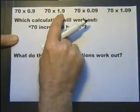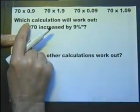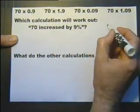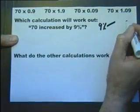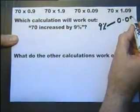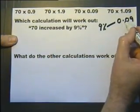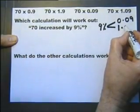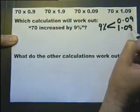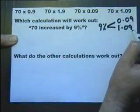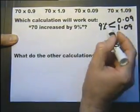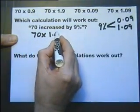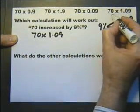We have four calculations. Which calculation will work out 70 increased by 9%? Let's look at 9%. 9% as a decimal is 0.09. However, if we multiply by 1.09, we do two things: we work out 9% and we automatically add on 9%. So this will increase by 9%. So 70 multiplied by 1.09 will increase by 9%, which is this one here.